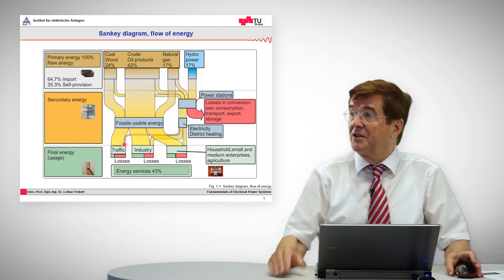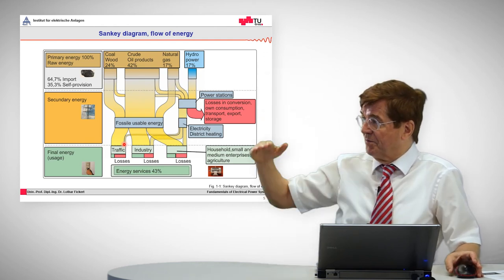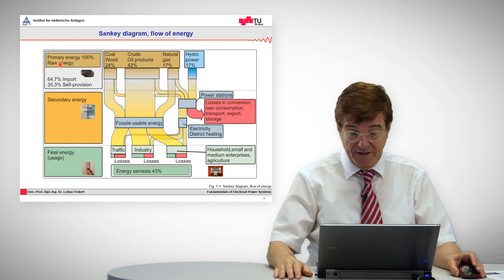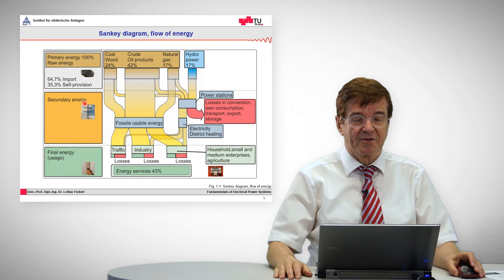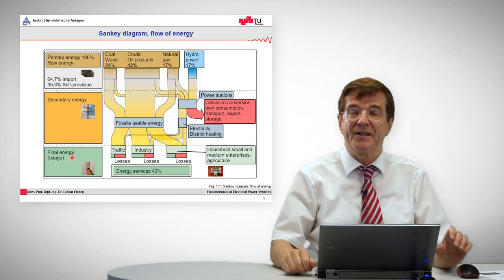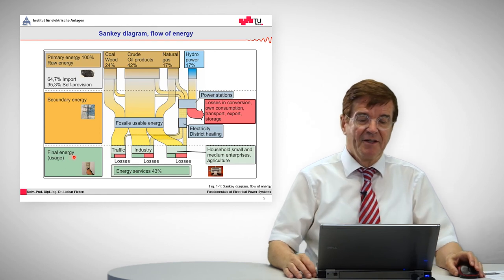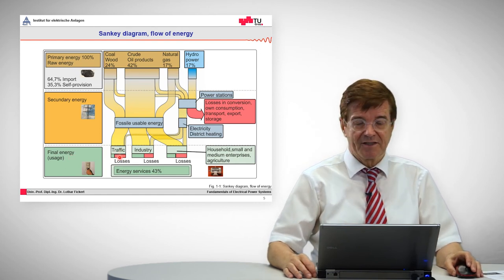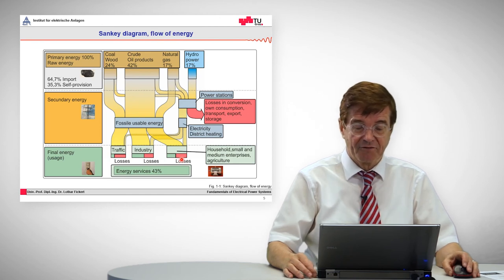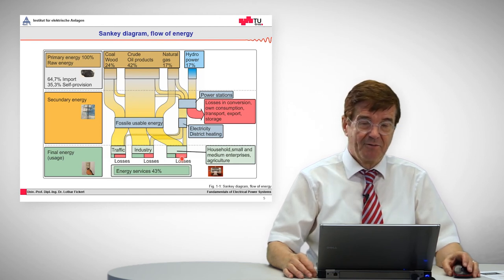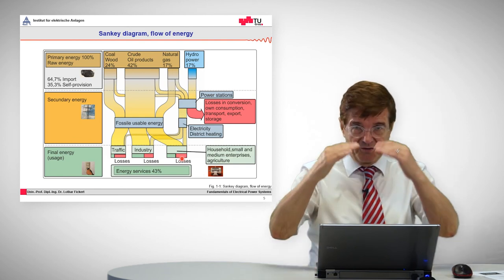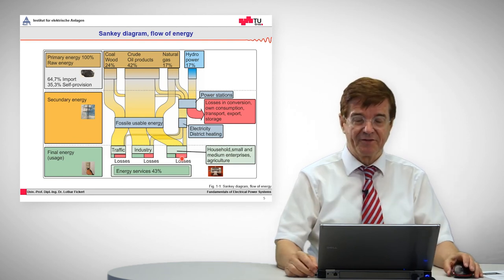The classification of energy from top to bottom is given in terms of primary energy or raw energy, in terms of secondary energy, and the final energy, where we as end users are interested in. Note please that the losses are still quite high in all these final circuits and final consumer levels, which is a pity, and where we should try to reduce the losses and increase efficiency.